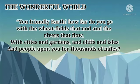Now, in the third stanza, the poet has described the earth by the term 'friendly' because there are wheat fields, rivers, cities, gardens, cliffs, and hills. Therefore, it is a very beautiful and friendly place where we can live with all the beautiful things of nature.